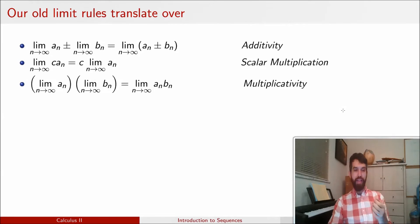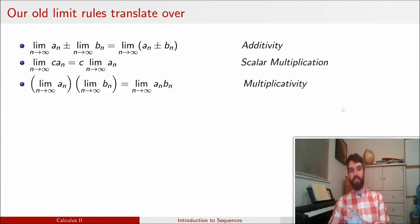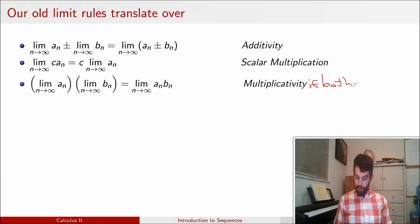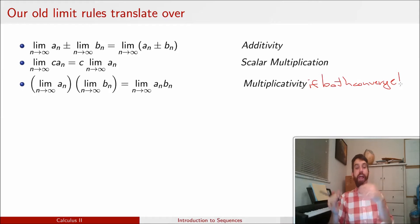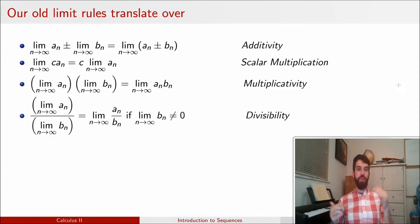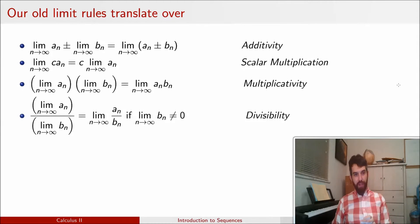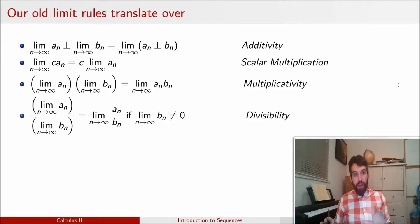We have a multiplication rule: if both the limit of a_n and the limit of b_n converge — it's only true if both converge individually — then the limit of the product is equal to the product of the individual limits. We can do the same with division: if a_n converges, b_n converges, and b_n converges to something that's not zero, then the limit of the quotient is just the quotient of the limits.